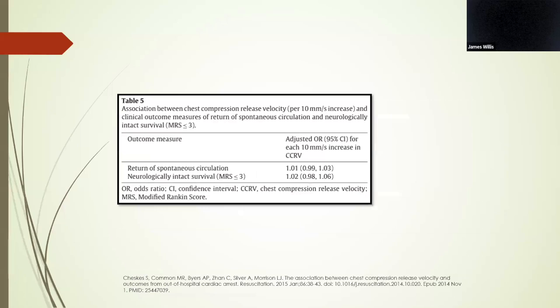In humans, though, the evidence has been mixed. One study looked at a little over 1,100 patients who suffered from out-of-hospital cardiac arrest within two regions in Ontario over a two-year period, and they didn't find any significant association between the chest compression release velocity and improved rates of ROSC or neurologically intact survival, which they defined as a modified Rankin score of less than three. These metrics were abstracted from accelerometer measurements taken during CPR, so from the defibrillators themselves.